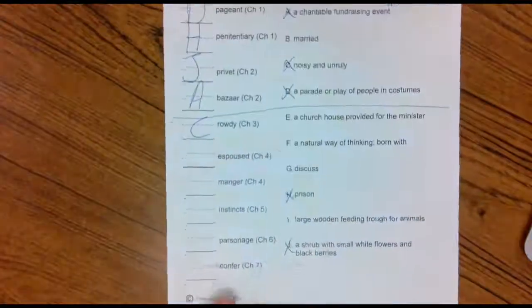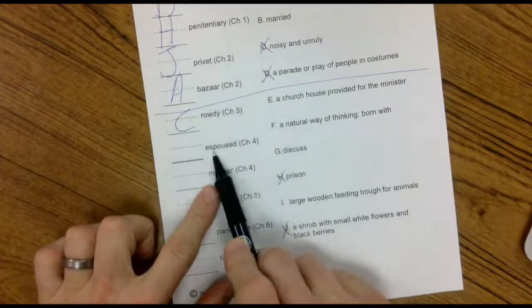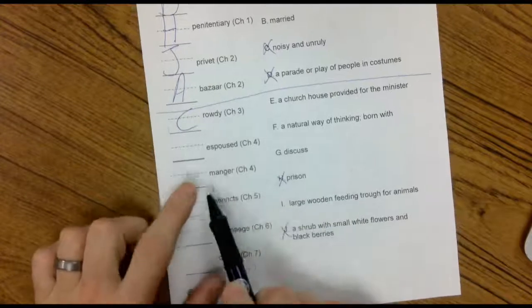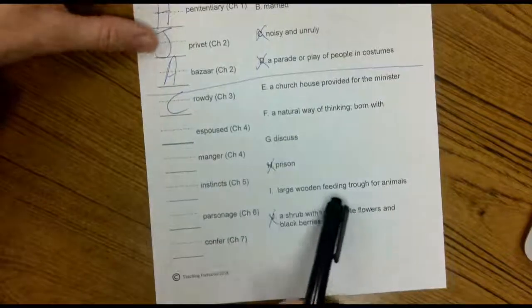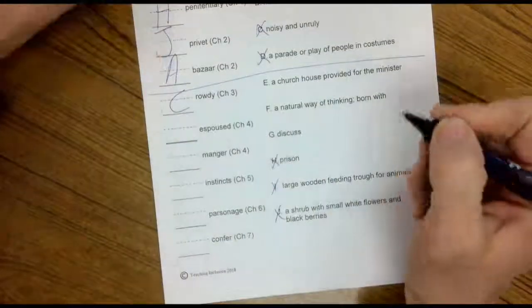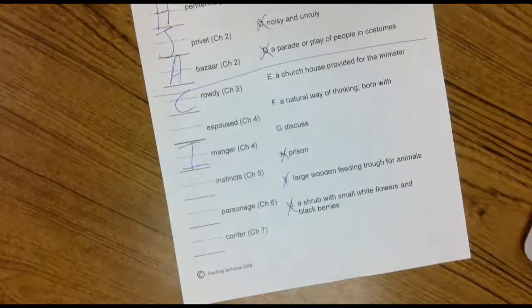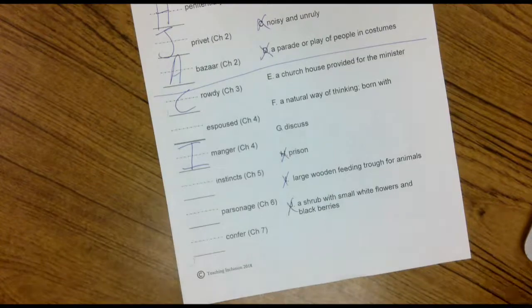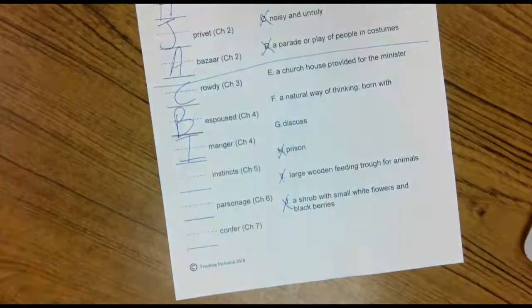All right, guys. That one's done. That one go back into your Tuesday folder. Here's the one that are moving from folder to folder this week. We got these two from chapter four. Exposed and manger. Now, I think manger is the easiest one. I think we all know that the manger was the large wooden feeding trough for the animals. That's an I. Exposed. Remember when we were talking about Mary? Mary was exposed to Joseph, which is a fancy old-fashioned word for being married.